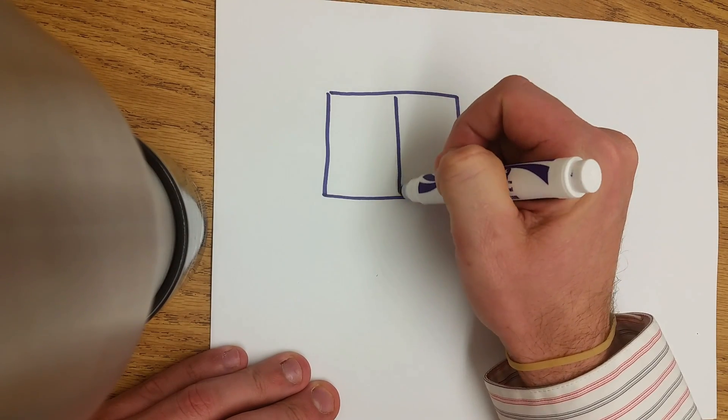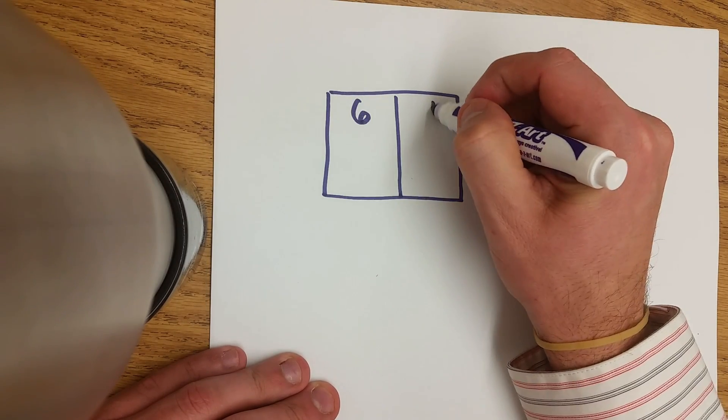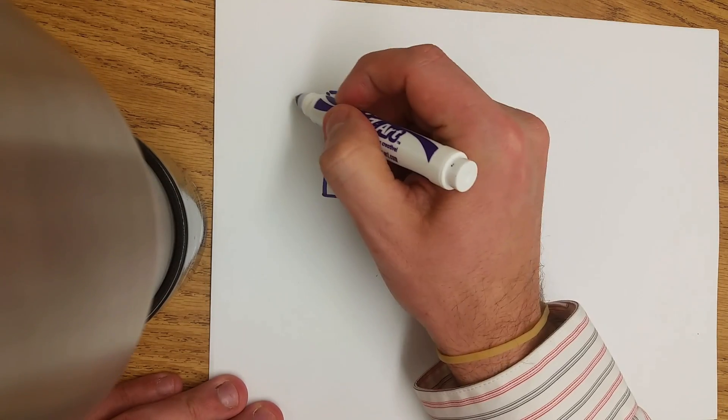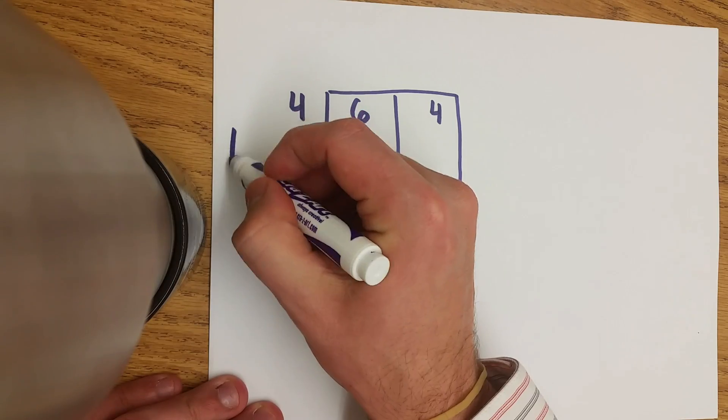We have 64, so the 6 goes in the first box and the 4 goes in the second box. And we're still dividing by 4. We need all the same steps.